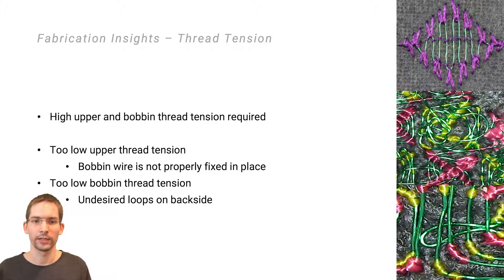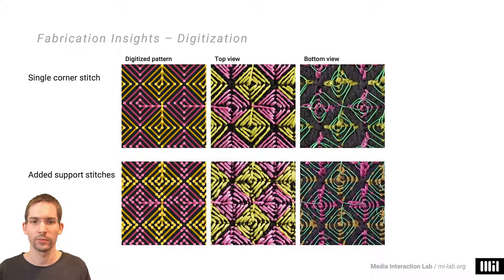Too little bobbin thread tension on the other hand can lead to undesirable wire loops. However, applying high amount of tension to the bobbin wire causes pattern distortions, therefore we added additional stitches to support acute angles as they distribute the exerted tension among them.